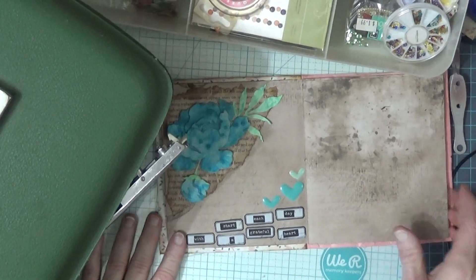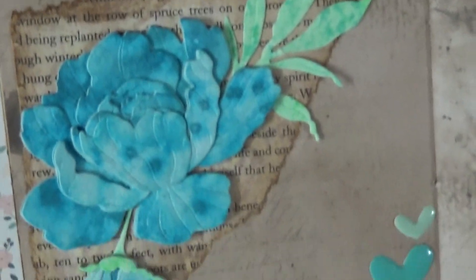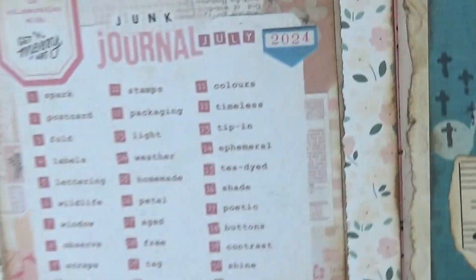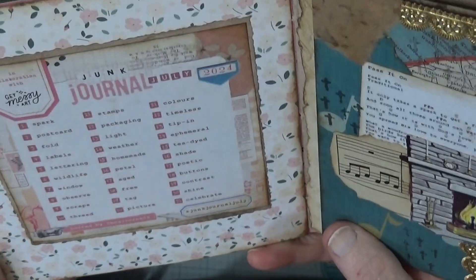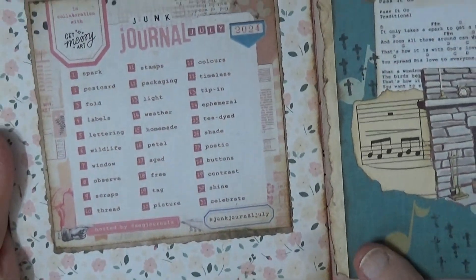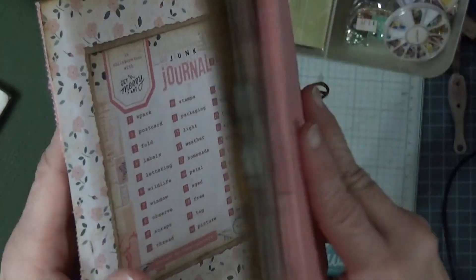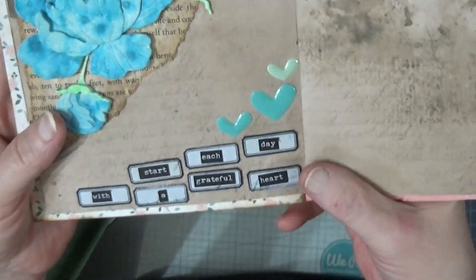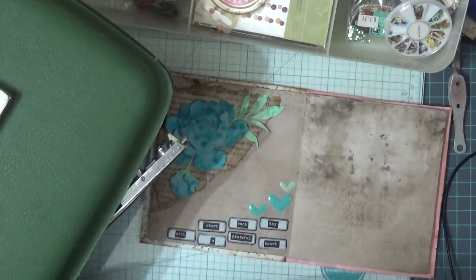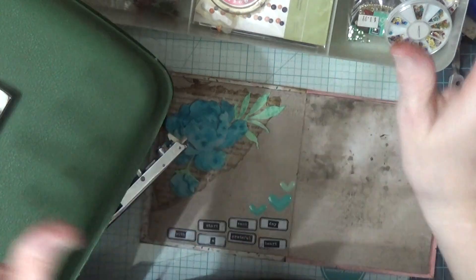All right. So, this is day four of the Junk Journal, July. Thing. I'll show you. This is the prompt list. And this is from Meg Journals. So, I will have a link below where you can go to her website if you are interested in joining in and doing the prompts. You have a blessed day. I'll see you soon. Bye.